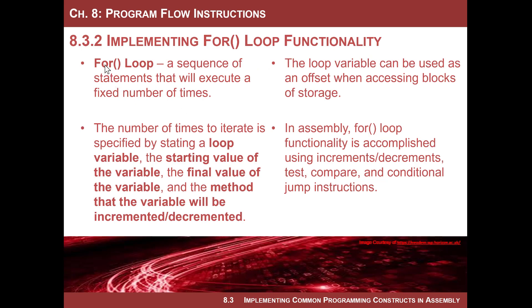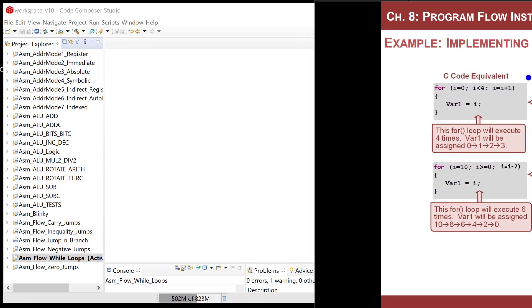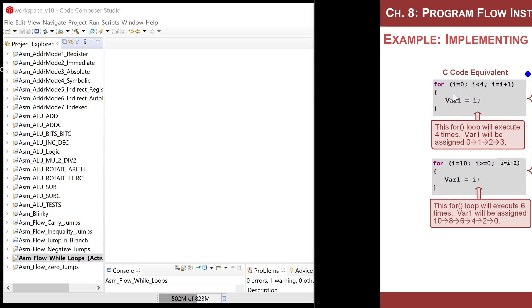A for loop is a loop that executes a certain number of times primarily. You provide three arguments: first is a loop variable like I or J and its starting value, then how you will alter the loop variable in the loop — it might be increment by one or decrement by two — and then you provide the final value for the loop. The loop variable will be automatically altered each time through the loop, giving you a loop that executes a predetermined number of times.